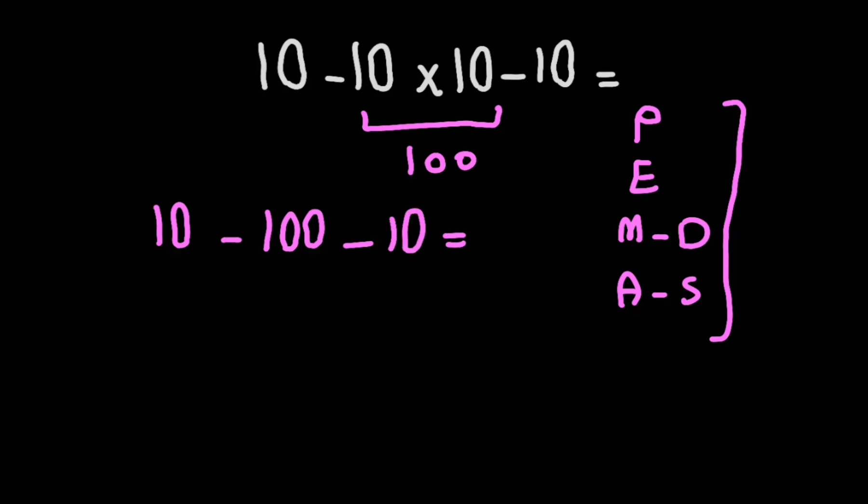Now as we know, when we have more than one subtraction in one expression, we have to solve from left to right. Now 10 minus 100 gives us negative 90.